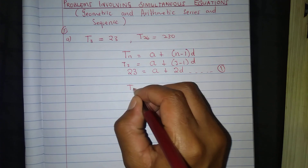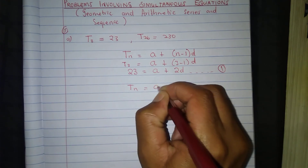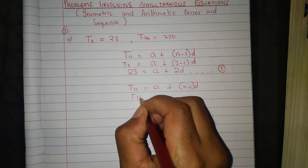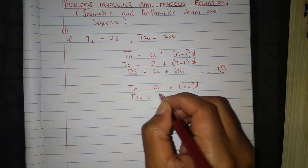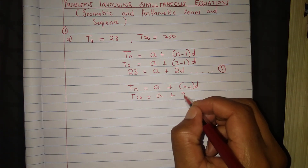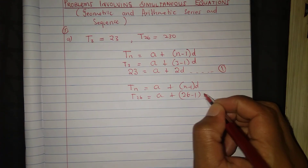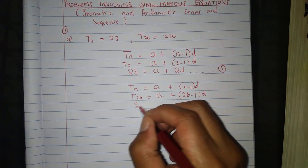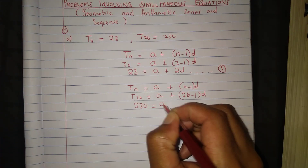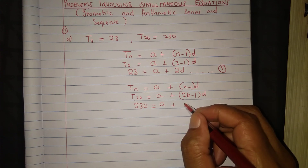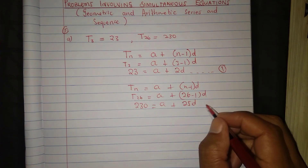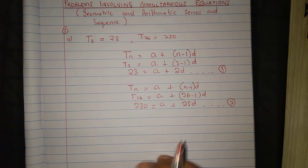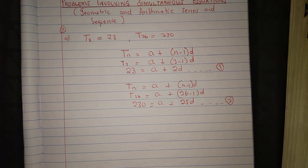The second equation: Tn = A + (N-1)D, so T26 = A + (26-1)D = A + 25D. T26 equals 230, so A + 25D = 230. This is equation 2.